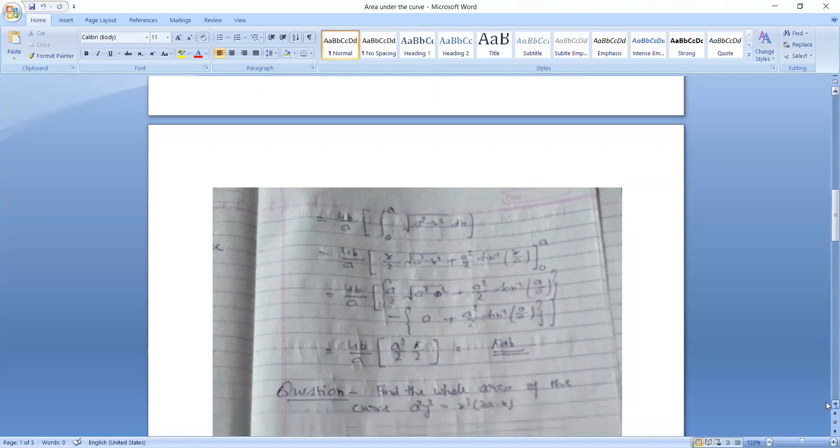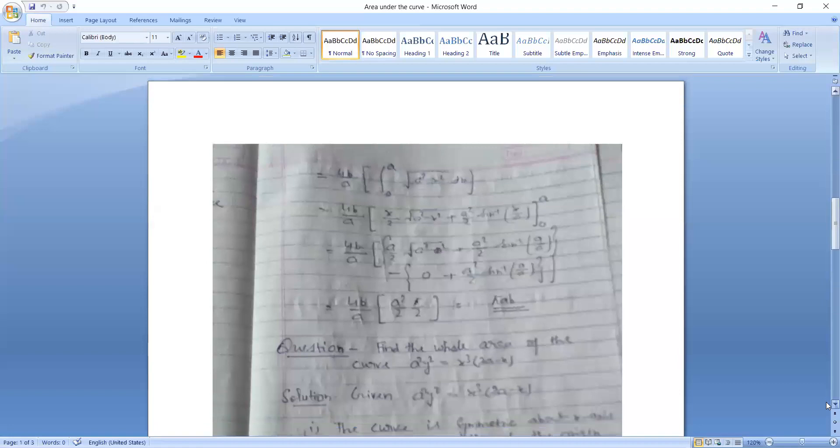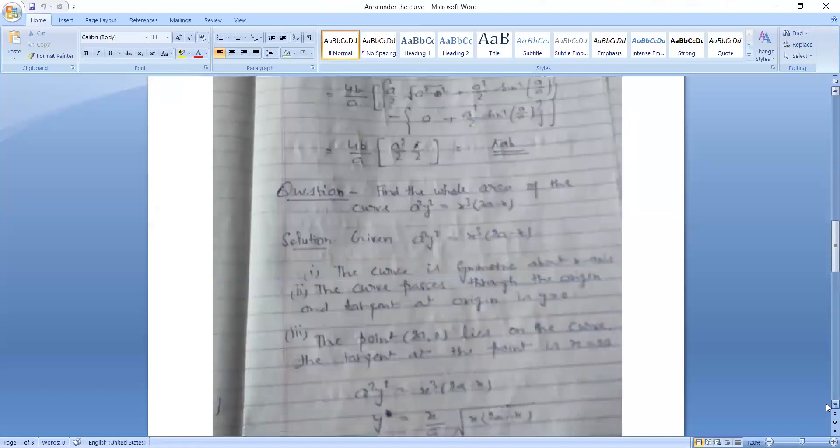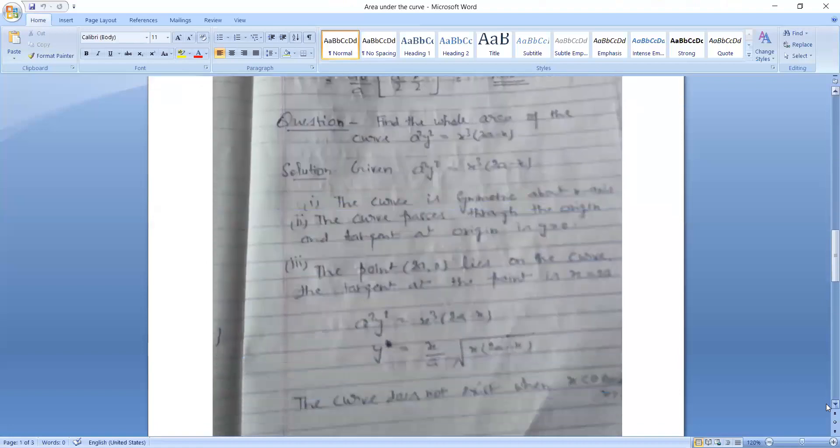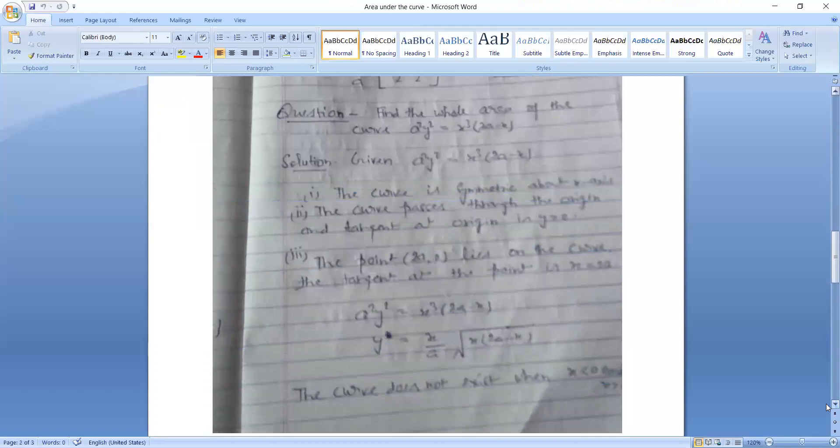Now see another question. Find the whole area of the curve A square Y square is equal to X cube in bracket 2A minus X. Given A square Y square is equal to X cube in bracket 2A minus X. The curve is symmetric above the X axis. Here we notice the curve passes through the origin and the tangent at origin is Y square to 0. The curve point 2A comma 0 lies on the curve.